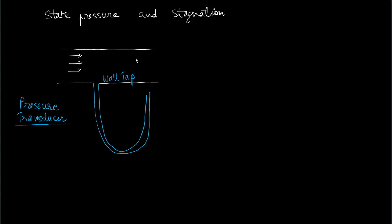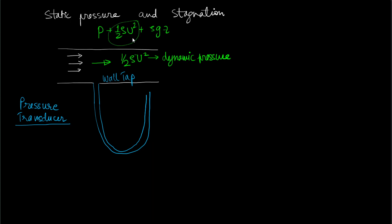We can connect a wall tap. When fluid is flowing, the velocity component has a pressure associated with it — half rho u squared — and this is called the dynamic pressure. Looking at the Bernoulli equation: p plus half rho u squared plus rho g z, the half-rho-u-squared term is the dynamic pressure, p is the static pressure, and the entire combination gives us the piezometric pressure.